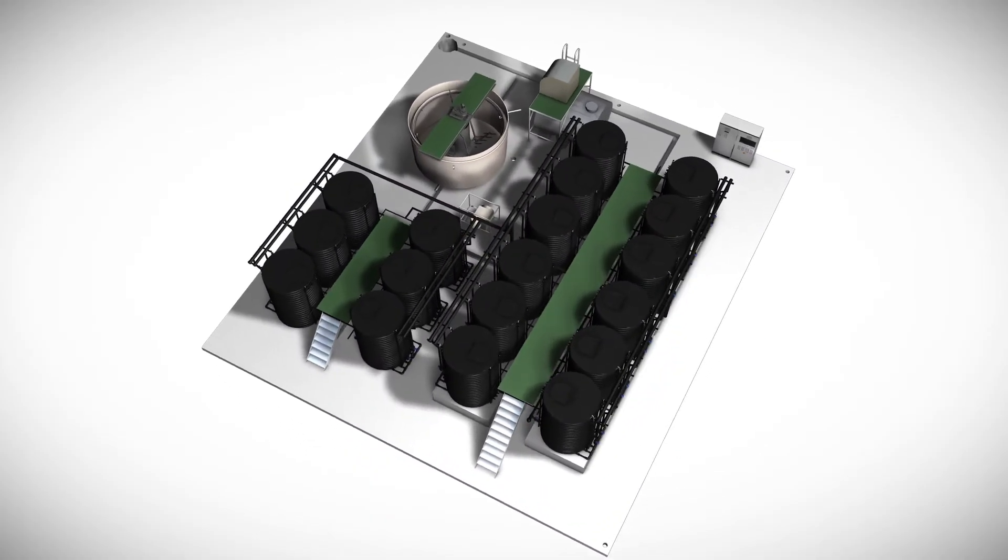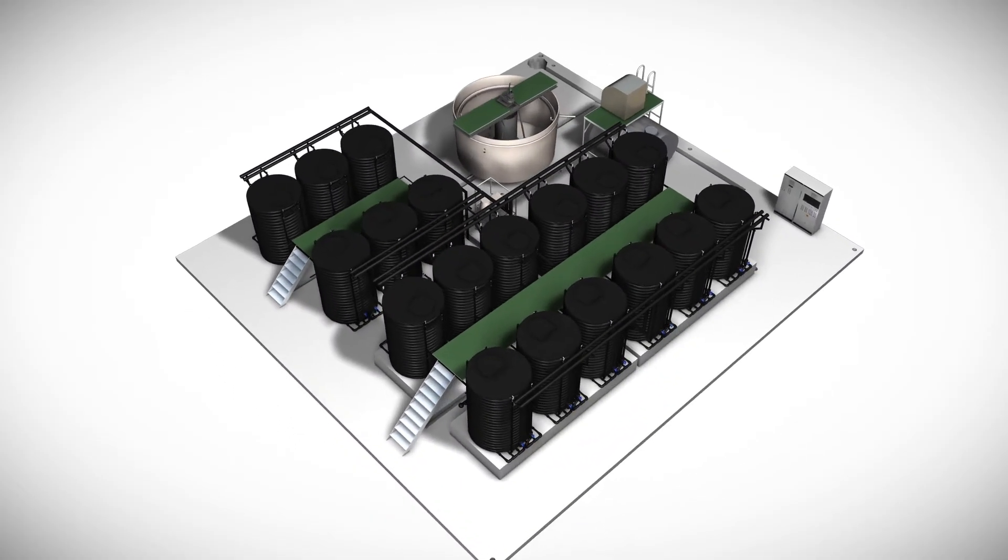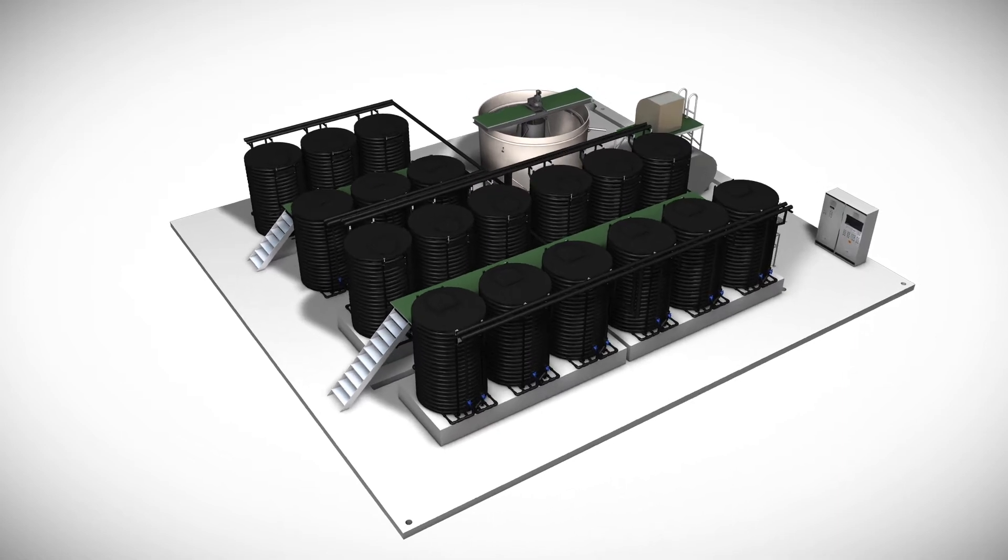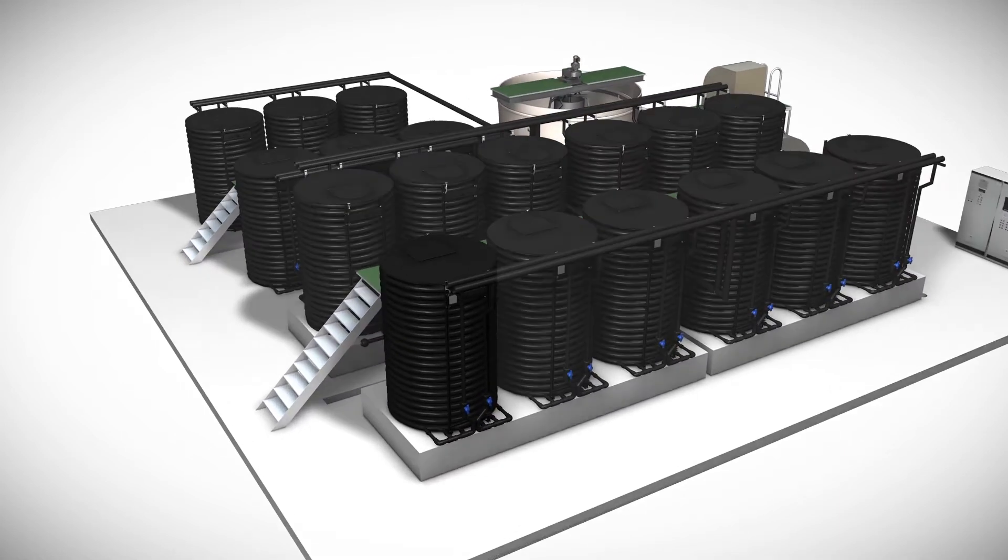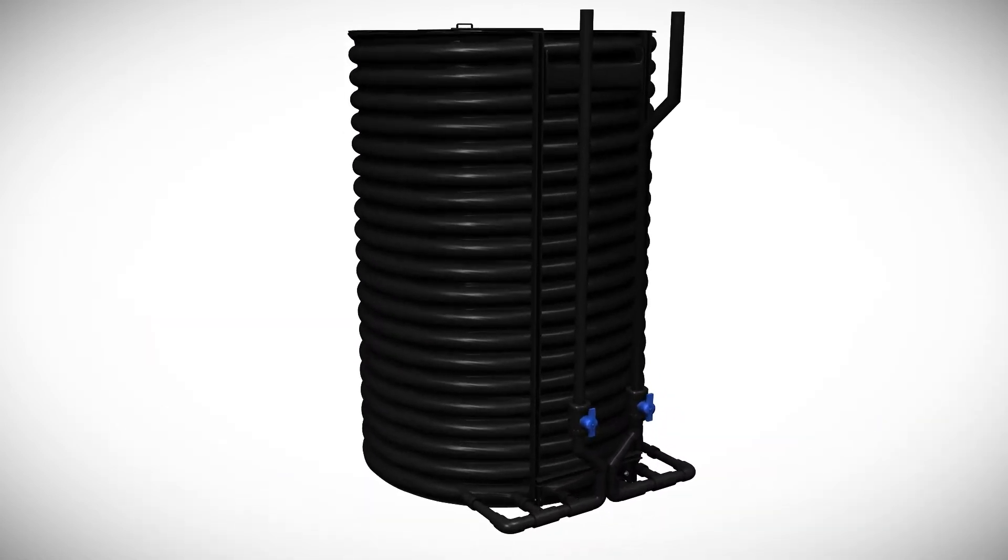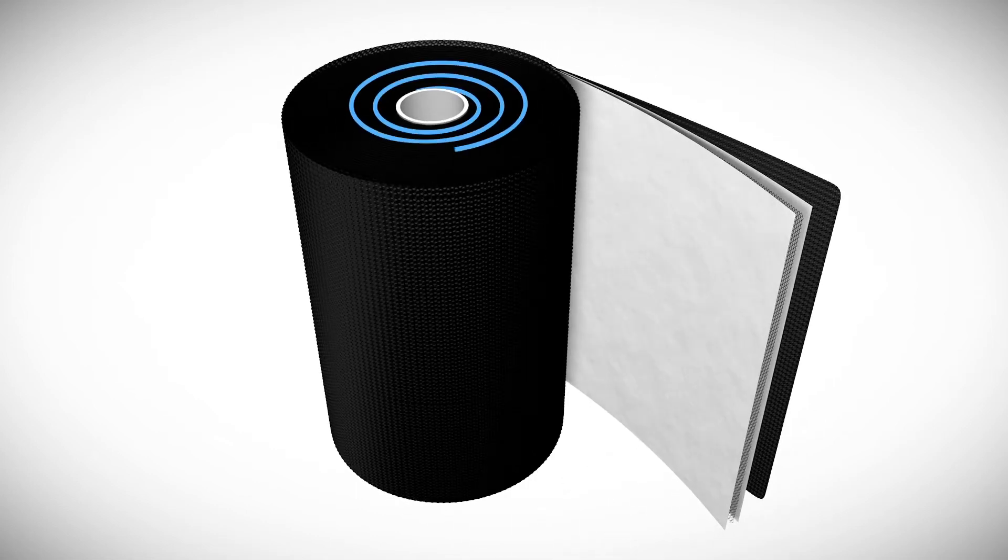The biological treatment in an MABR plant is made up of multiple MABR modules such as this one shown. Inside a module tank there is a spirally wound membrane sleeve with spacers.